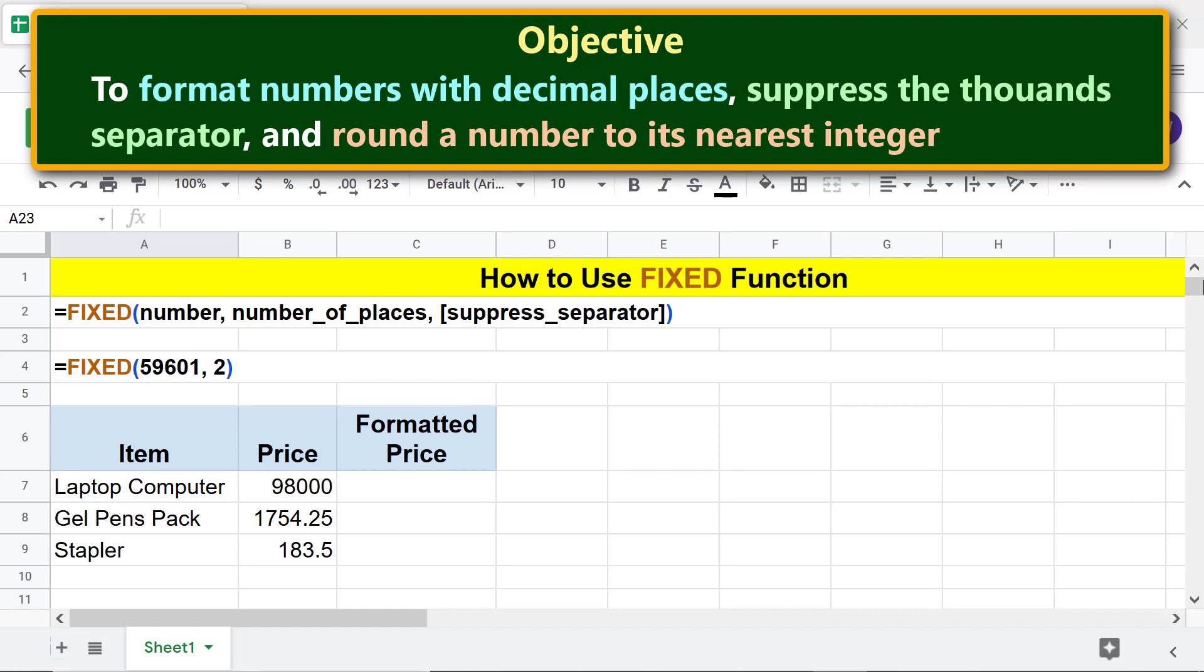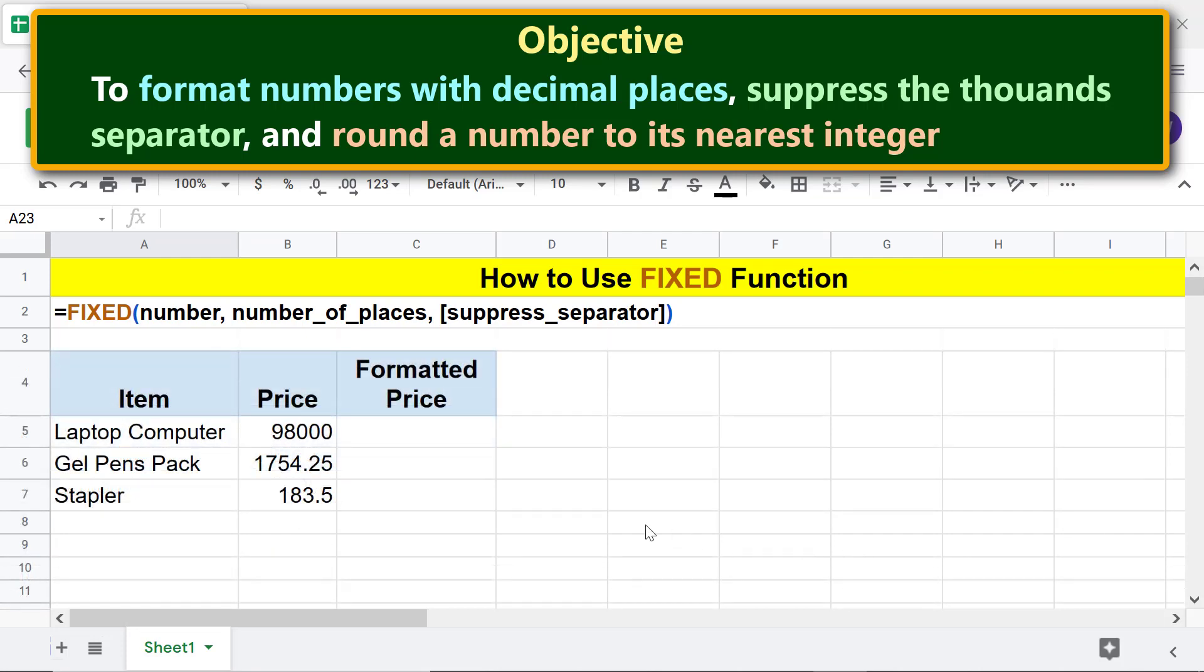Let's begin by typing the FIXED function formula. First, type equals F-I-X-E-D and select FIXED. For number, click this cell, type comma. For number of places, for example, type 2.